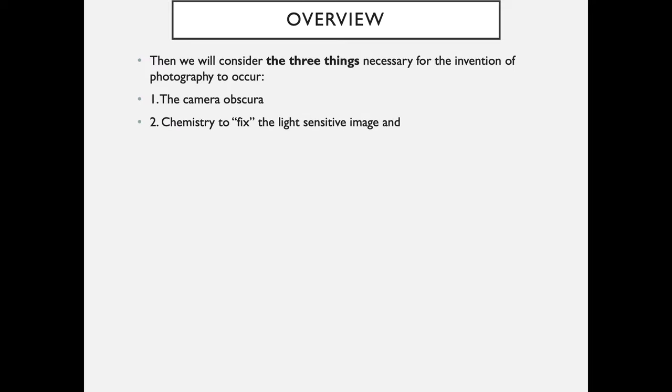Then we will consider the three things necessary for the invention of photography to occur. One, the camera obscura. Two, chemistry to fix the light-sensitive image. And three, photographic vision.